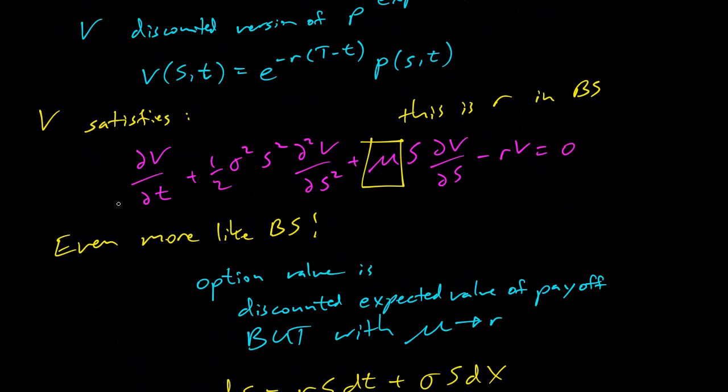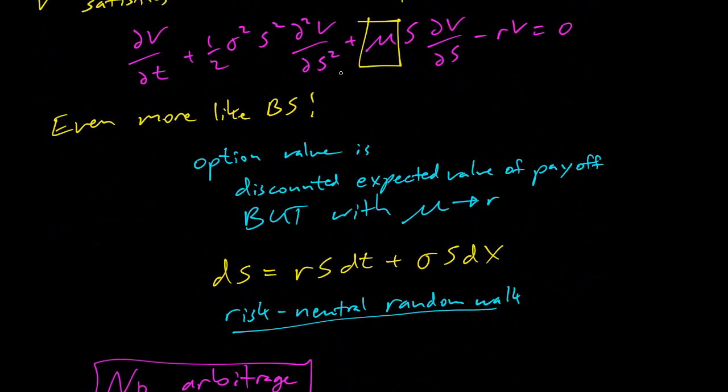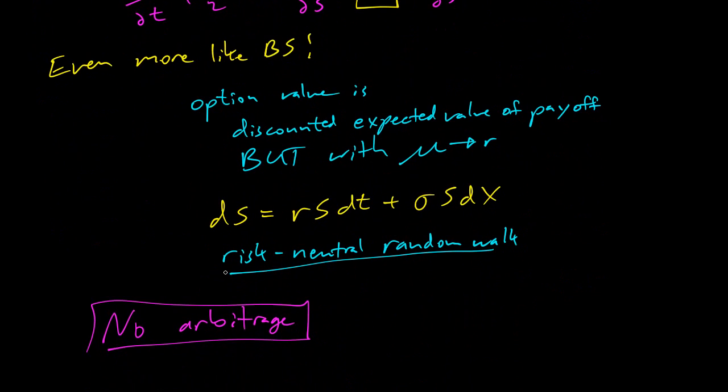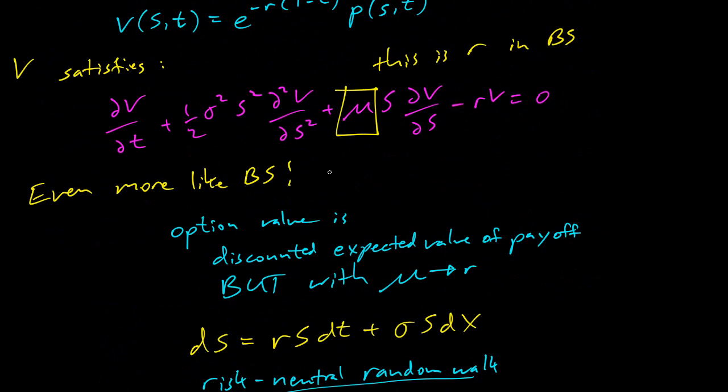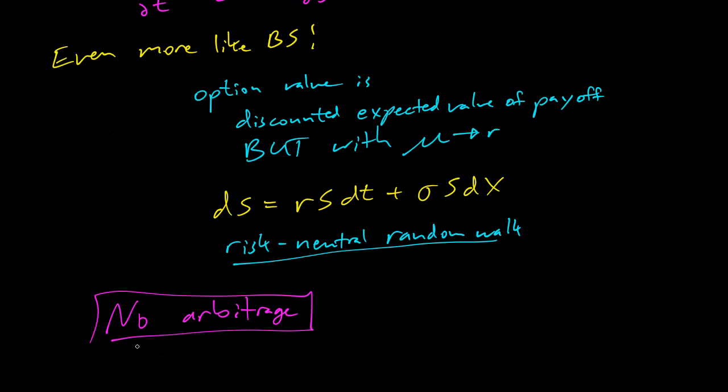It's not just the expected value here. You have to assume that the random walk is a risk-neutral random walk. Suppose you violated this assumption - suppose that options actually did have a mu here. Then that means you could delta hedge and you'd get the return with the mu, and it would be risk-free money and you'd be getting an interest rate mu instead of an interest rate r, and that would exactly violate the no arbitrage principle. This is pretty amazing stuff here, very cool.